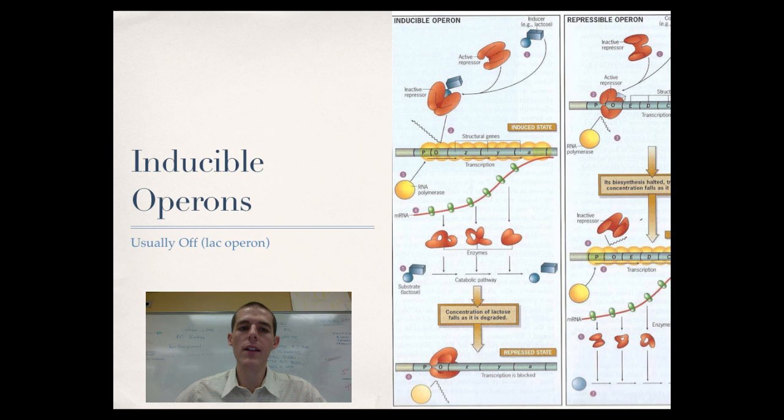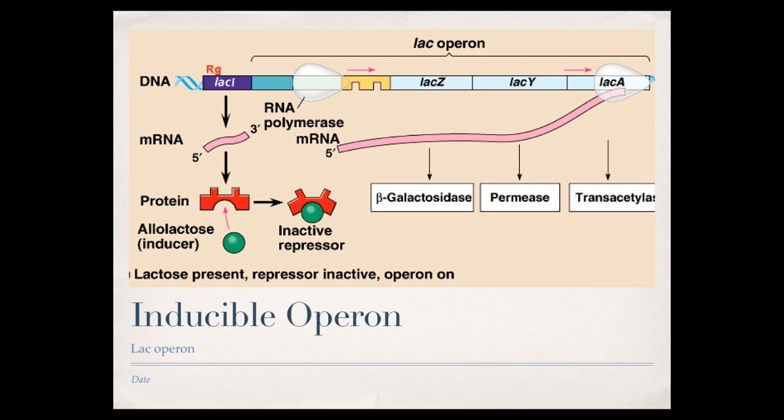All right, so usually this operon is not on, but when your body has lactose in it, obviously it needs the enzymes to break down that lactose, so the pathway would be turned on. It would be induced so that the enzymes can be made that are needed to break down lactose, and this is what that pathway looks like.